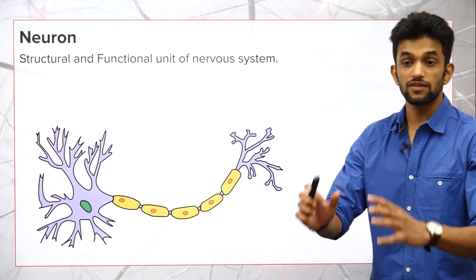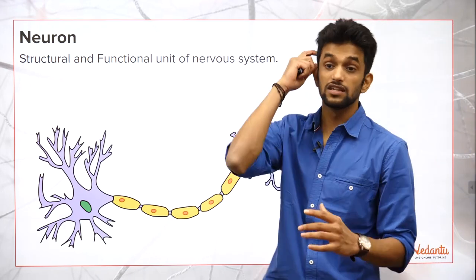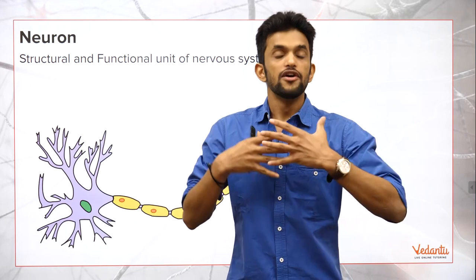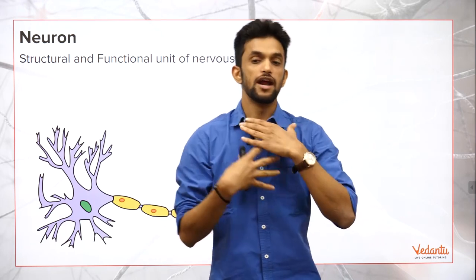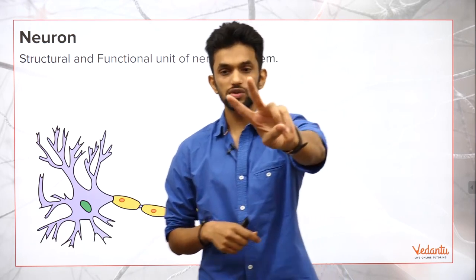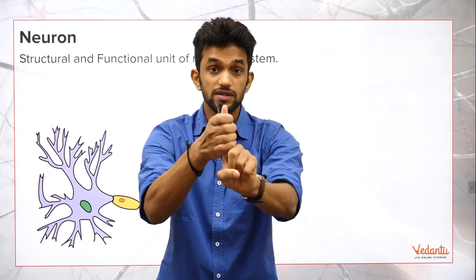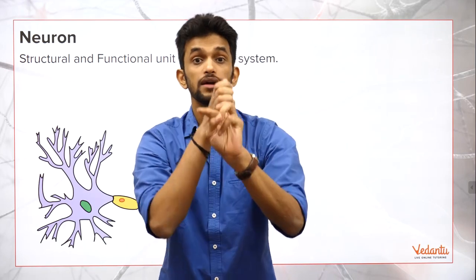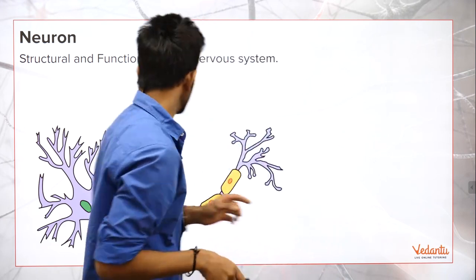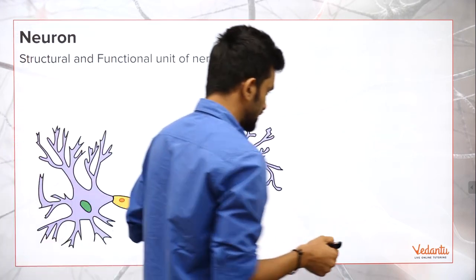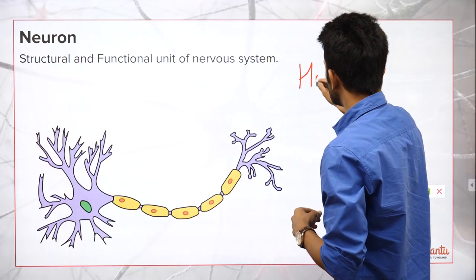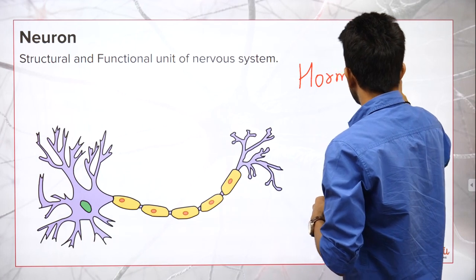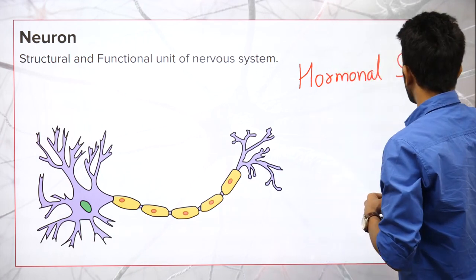What is the structural and functional unit of the nervous system? When we talk about the human body, it is controlled by two things: one is the nervous system, and the second is the hormonal system. The nervous system is made up of the brain, spinal cord, and various nerves. Then there is the hormonal system.